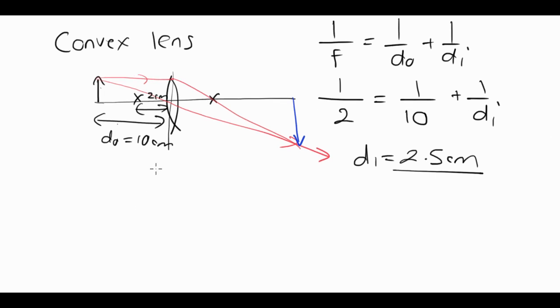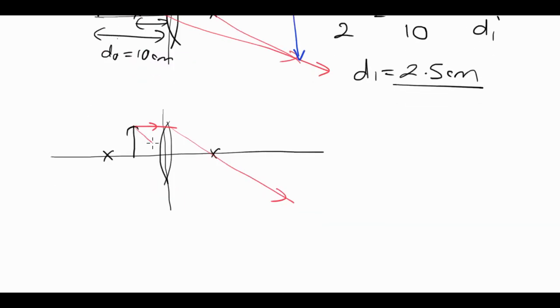Next scenario is when we have the object closer to the lens than the focal point. So here's our object, here's our focal points here and here. Very quickly, we know that if a light ray goes parallel, it's going to come through there through the far focus.